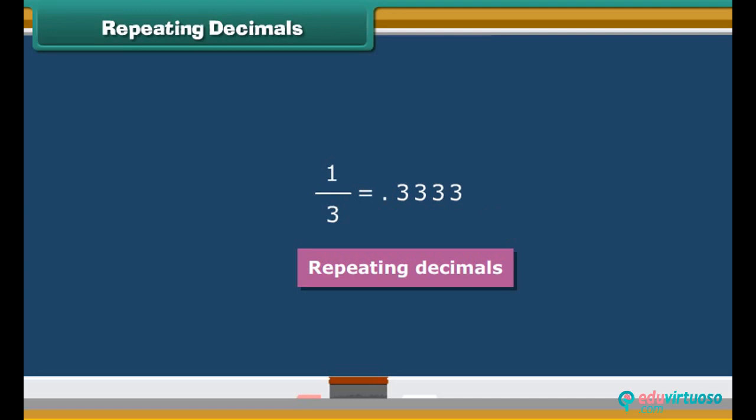You can round off the number after the third tenth or three hundredth, but it is more accurate to put a line over the last number. This line indicates that the number keeps on going.